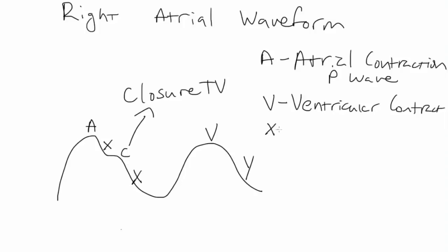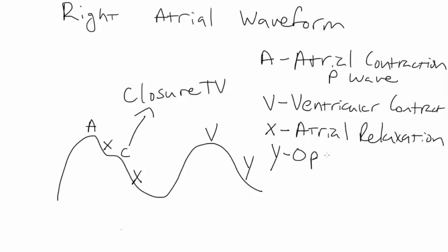There's the X descent, which is atrial relaxation — the relaxation of the atria following atrial systole. And then there's the Y descent, which is basically ventricular diastole, or opening of the tricuspid valve and filling of the right ventricle.